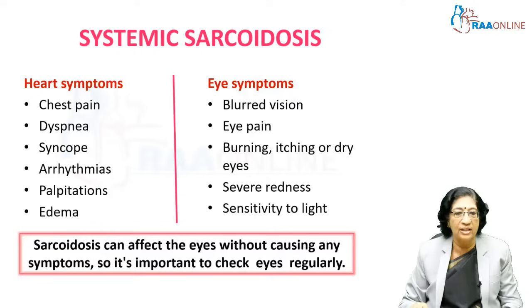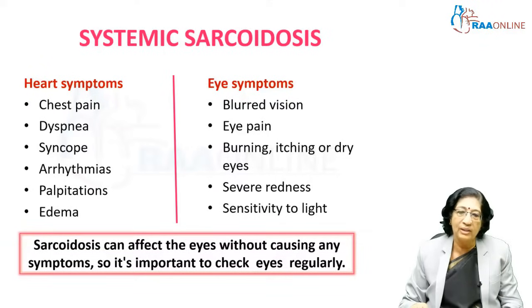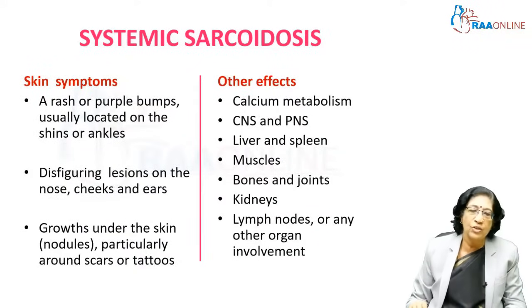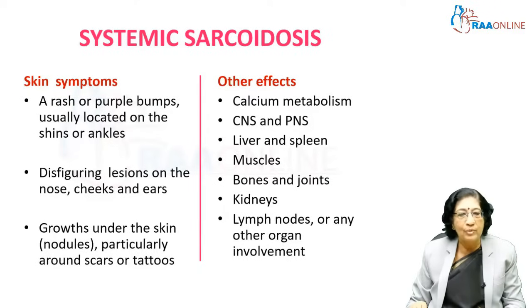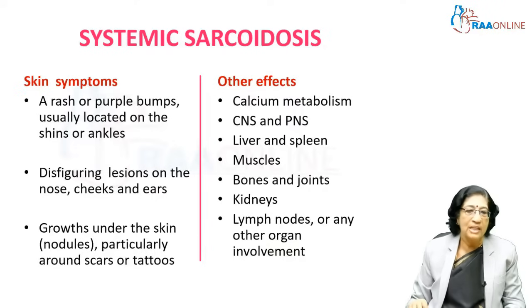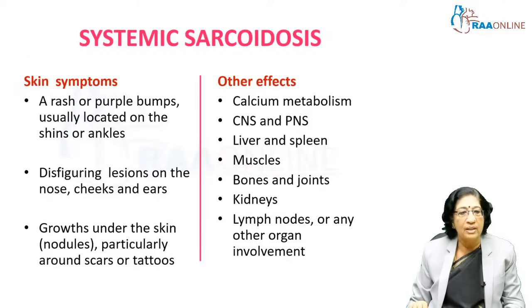There can be severe redness and sensitivity to light. Importantly, sarcoidosis can affect the eyes even without causing any symptoms, so it is very important to check the eyes regularly, at least once a year. Skin symptoms can be in the form of a rash or purple bumps, generally located on the shins or ankles. In the face, disfiguring lesions can affect the nose, cheeks, and ears, and many patients wear a mask to cover these lesions.